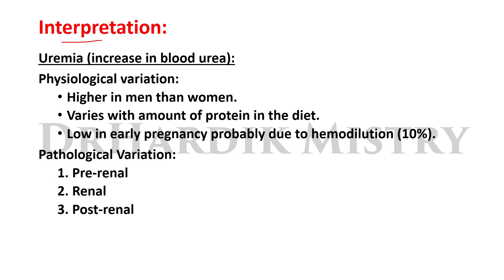Interpretation — uremia, i.e., increase in blood urea. Physiological and pathological variations in which blood urea level is increased. Physiological variations include: it is higher in men than women; it varies with the amount of protein in the diet; and it is low in early pregnancy, probably due to hemodilution, around 10%.